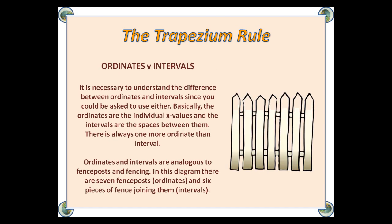Ordinates versus intervals. It is necessary to understand the difference between ordinates and intervals, since you could be asked to use either. Basically, the ordinates are the individual x values, and the intervals are the spaces between them. There is always one more ordinate than intervals. Ordinates and intervals are analogous to fence posts and fencing. In this diagram, there are seven fence posts — the ordinates — and six pieces of fence joining them — the intervals.